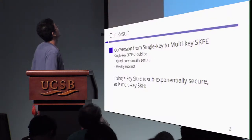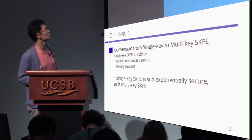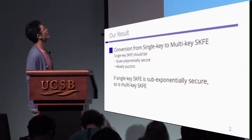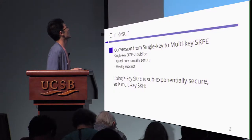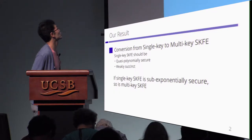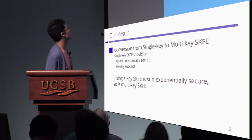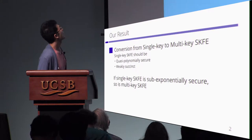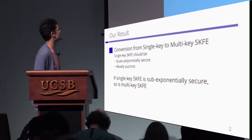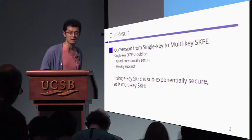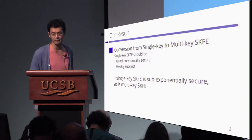In this work, we propose a conversion from single key to multi key secret key functional inclination. Single key secret key functional inclination should be quasi-polynomially secure and weakly succinct. And if single key SKFE is sub-exponentially secure, then so is multi key SKFE.